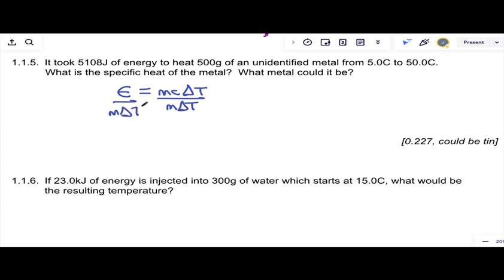We want specific heat so you can divide both sides by m delta t, mass and temperature change. Specific heat is energy divided by mass and temperature change. So 5108 joules divided by 500 grams, also divided by from 5 to 50 is a 45 degree temperature difference. And 5108 divided by 500 also divided by 45 gives 0.227 joules per gram degree Celsius for the specific heat.